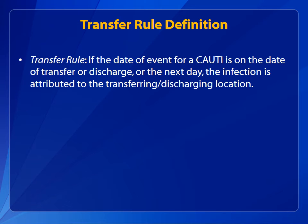Let's review the transfer rule definition. The transfer rule states if the date of event for a CAUTI is on the date of transfer or discharge, or the next day, the infection is attributed to the transferring or discharging location.